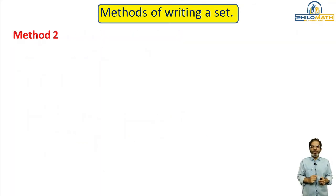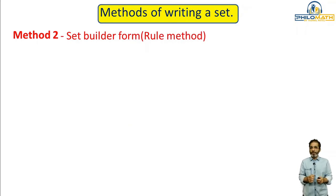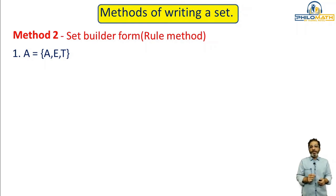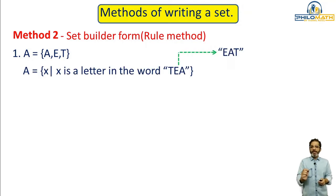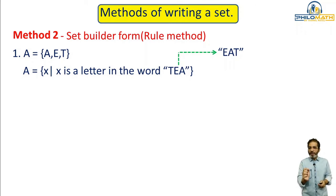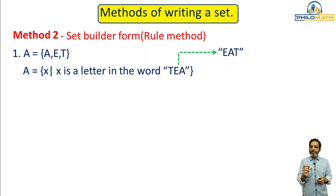Now let us take the second method, called the set builder form, also called the rule method. Take the first example: A = {a, e, t}. Using these alphabets you have to form a word. In set builder form, we write A = {x | x is a letter in the word 'eat'} — or you can write 'tea,' both are correct. The vertical line means 'such that.'